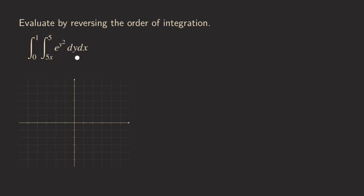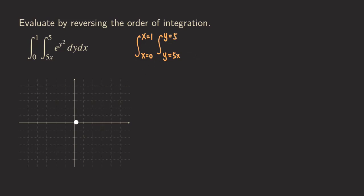First we need the region of integration, but before that, it's a good idea to start by simply rewriting the limits. So we can write x equals zero and x equals one, because those are the limits for x. And then for the inner integral, we have the limits for y, so we can write y equals five x and y equals five. That will make it easier for us to draw the region.